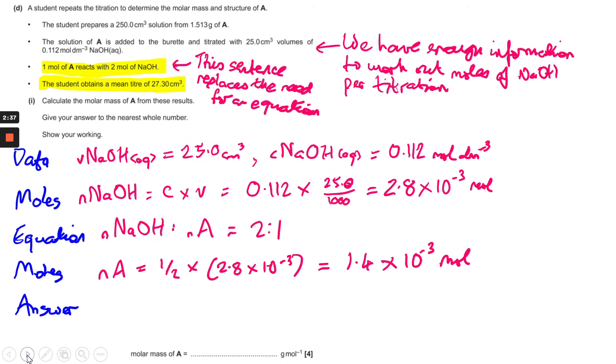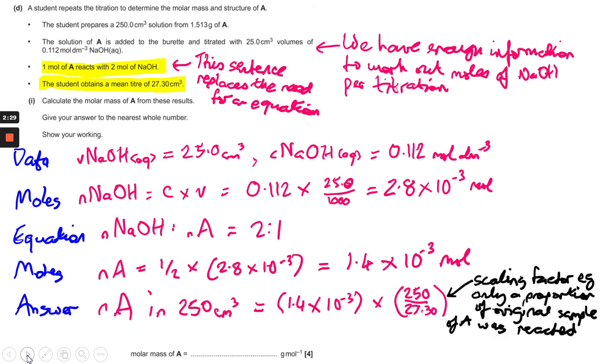So the student obtains a mean titer of 27.30, so that means there's a scaling factor involved. So you take your moles of A and you multiply that by the scaling factor - that's how many times 27.30 goes into 250 - and that gives us a calculator value.